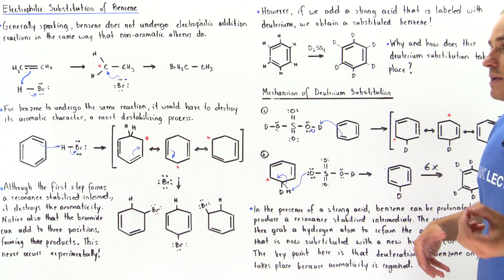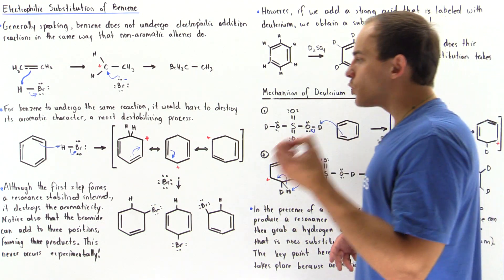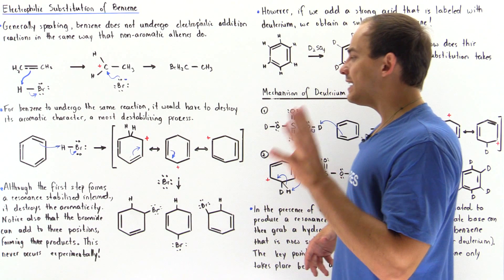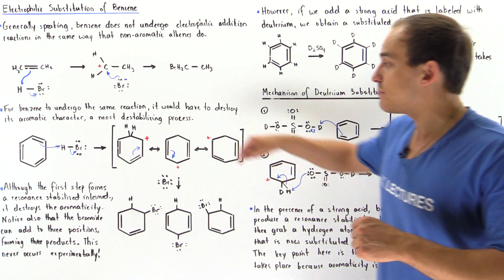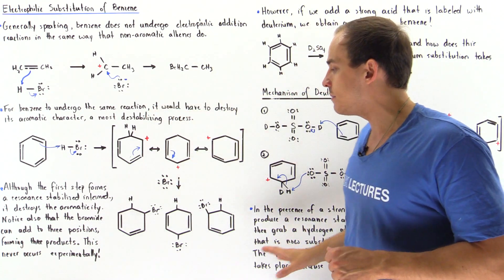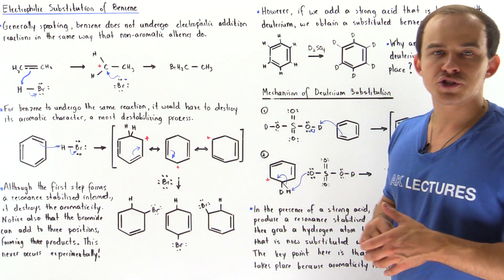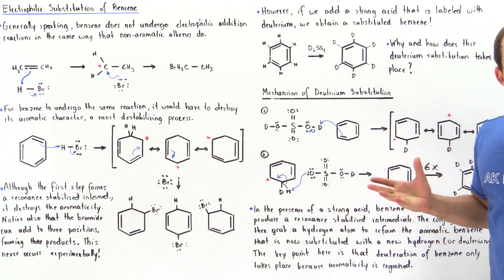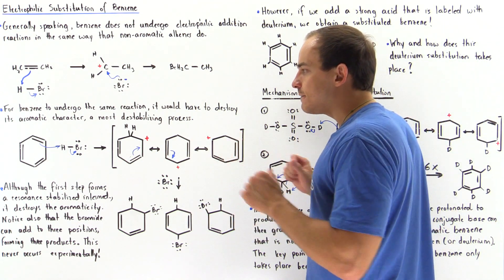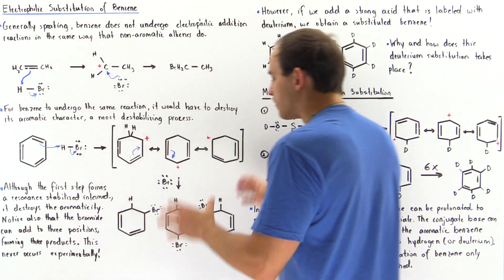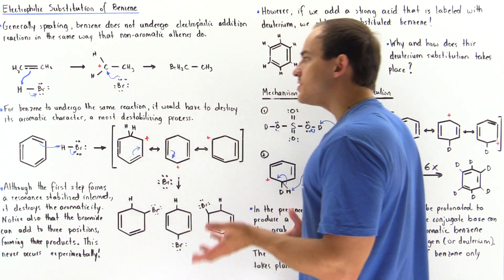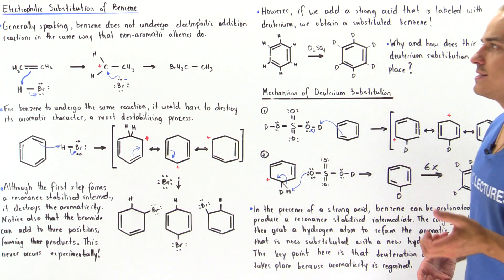In the second step — the addition step — the bromide has three potential pathways it can take. It can grab this carbon, this carbon, or this carbon, forming three potential products. The question then becomes: what is the difference between the reactants and the products that tells us why this reaction does not take place in nature?